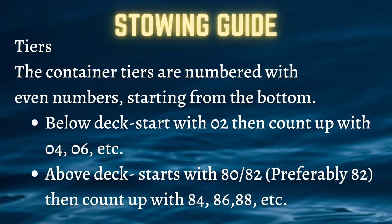When labeling the tiers, container tiers are numbered with even numbers starting from the bottom. Below deck starts with 02, then count up with 04, 06, etc. Above deck starts with 80 or 82, but preferably 82, then count up with 84, 86, 88, etc.